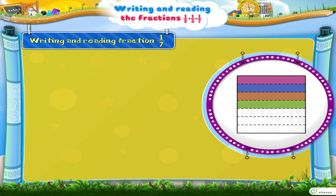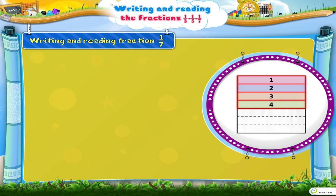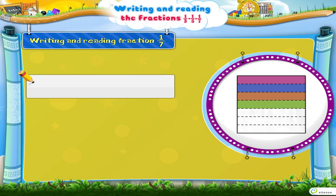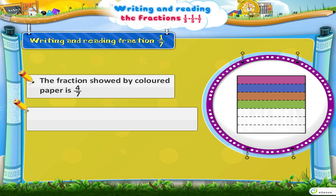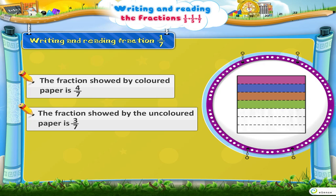Now look at this strip of paper. The number of equal parts it is divided into is 7. The number of parts coloured is 4. So the fraction shown by the coloured part is 4 upon 7. The fraction shown by the uncoloured part is 3 out of 7.